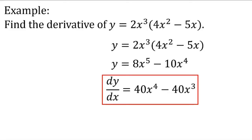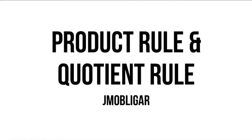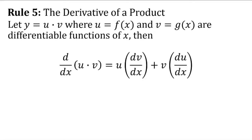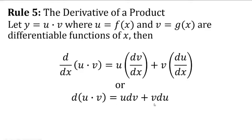Now, one of the basic differentiation rules is the product rule and the quotient rule. We will be having the derivative of a product. Let y equal u times v, where u equals f of x and v equals g of x, and they are differentiable functions of x. Then the derivative of u times v equals u times dv over dx plus v times du over dx, or simply: d of uv equals u dv plus v du. That is the product rule.